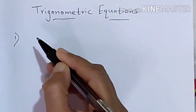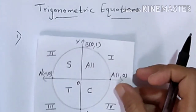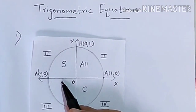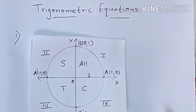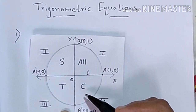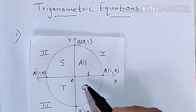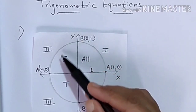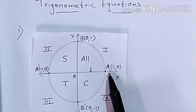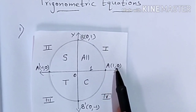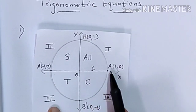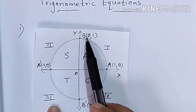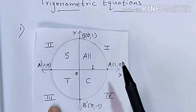First of all we will have to recall the standard unit circle. The standard unit circle is a circle whose center is at the origin and radius is equal to 1 unit. When ray OP makes angle theta with the x-axis, the coordinates of P are cos theta and sine theta. So on the standard unit circle, coordinates of A are 1,0; B is 0,1; A dash is -1,0; and the bottom point is 0,-1.